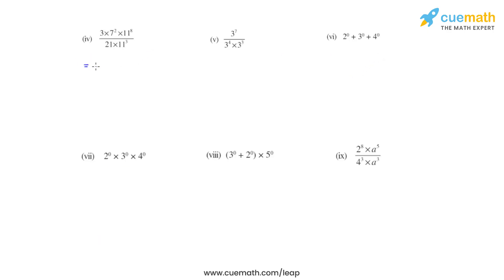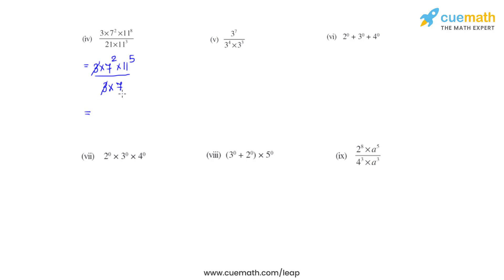In the fourth bit, we have 3 times 7 raised to 2 times 11 raised to 8, in the denominator we have 11 raised to 3. Applying the quotient law: 11 raised to 8 divided by 11 raised to 3 gives 11 raised to 5. The denominator also has 21, written as 3 times 7, so 3 cancels with 3, and 7 squared divided by 7 gives 7 raised to 1. The final answer is 7 raised to 1 times 11 raised to 5.